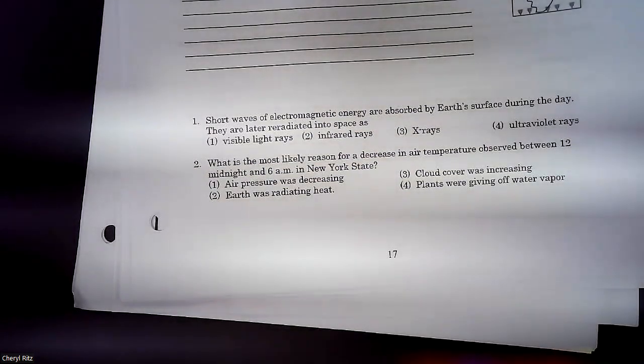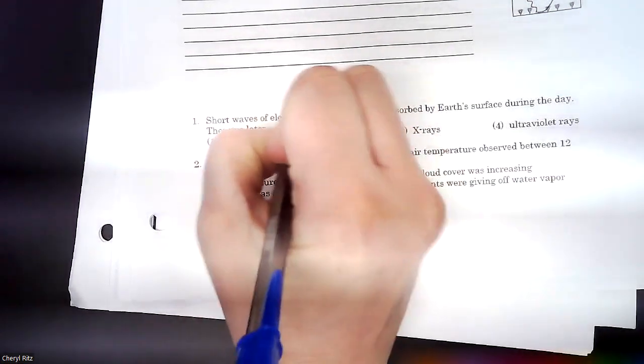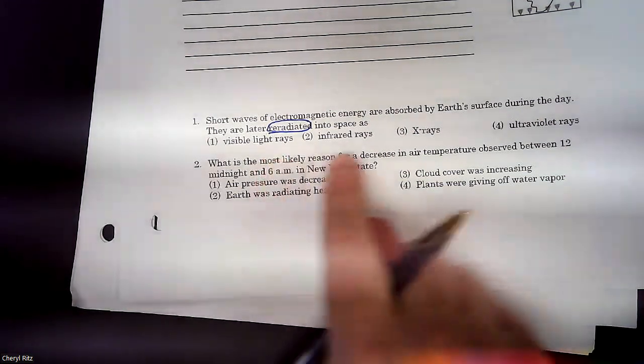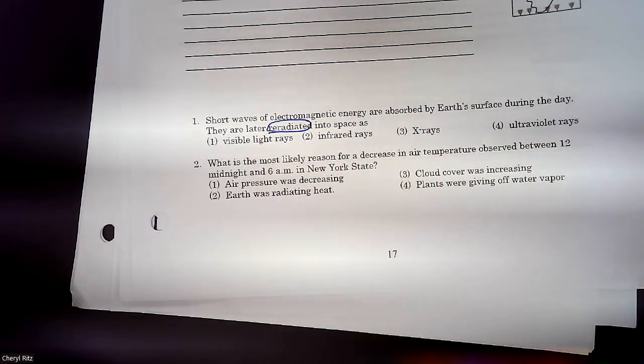Short waves of electromagnetic energy are absorbed by the Earth's surface during the day. They are later re-radiated. That's that word we talked about yesterday. Into space as... So after the Earth has soaked them in, what do they re-radiate as? Visible light, infrared, x-rays or ultraviolet. What'd we say?